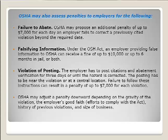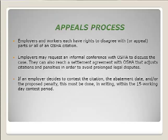OSHA can also adjust penalties downward depending on the gravity of the violation, efforts to comply with the act, history of previous violations, and what types of written programs and training are in place. There is also an appeals process. We have the right to disagree with or appeal parts or all of an OSHA citation. We can request an informal conference to discuss the case and reach a settlement agreement, which adjusts penalties to avoid prolonged legal disputes. If we contest the citation, abatement date, or proposed penalty, it must be done within 15 days.